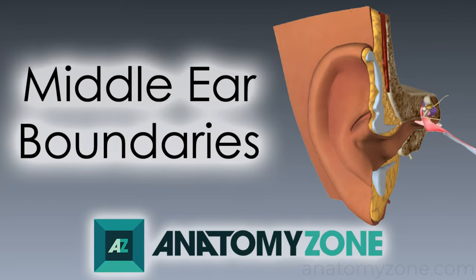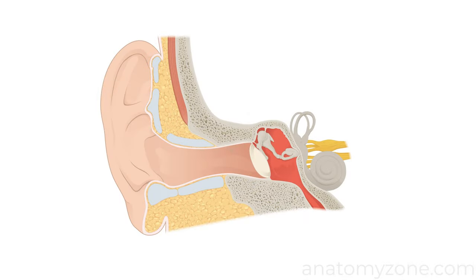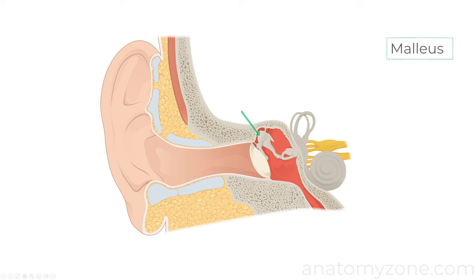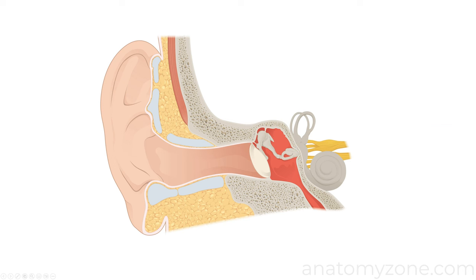Hi, this is Peter from Anatomy Zone and in this tutorial we're going to take a look at the boundaries of the middle ear. The middle ear is an air-filled space within the temporal bone which lies between the tympanic membrane laterally and the inner ear medially. It contains three ossicles which connect the tympanic membrane to the inner ear at the oval window: the malleus, the incus and the stapes. The ossicles transmit sound vibrations from the external auditory meatus into the inner ear apparatus.